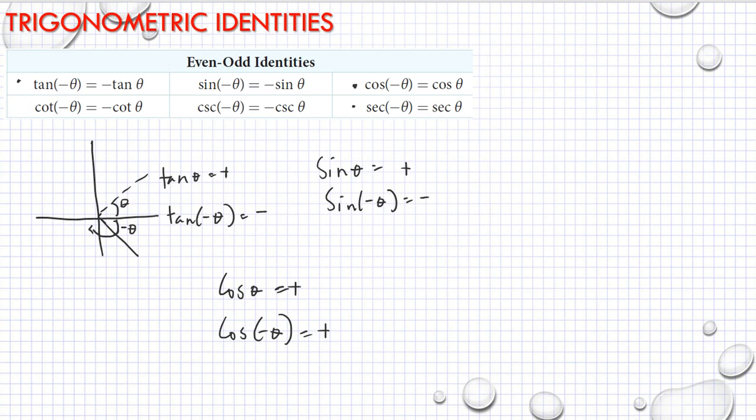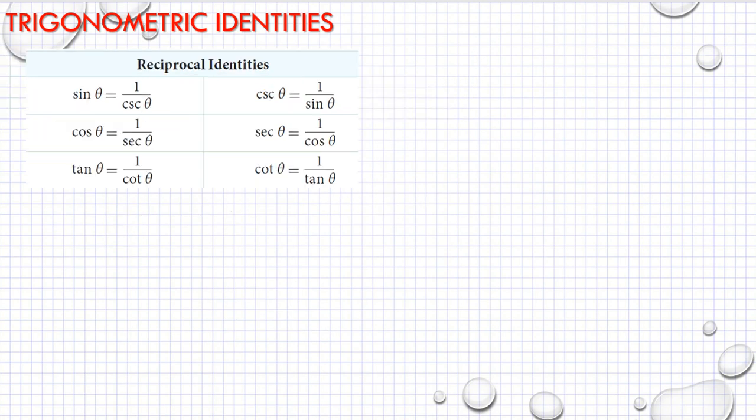But it is not the same with tangent and sine and their reciprocals. Some more identities: reciprocal identities — sine and cosecant are reciprocals, cosine and secant are reciprocals, tangent and cotangent are reciprocals, and vice versa.